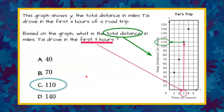So the answer is that Ty drove 110 miles in his first three hours. Answer C.